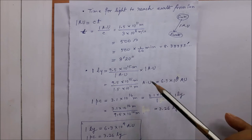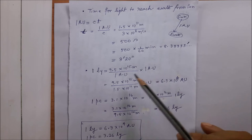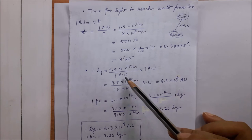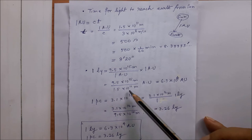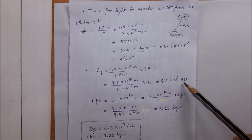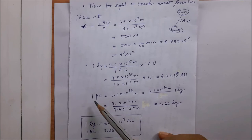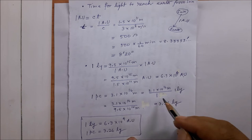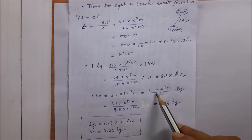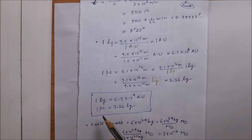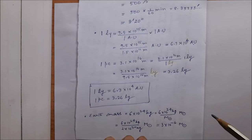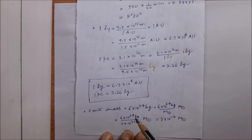Let us find the conversion factors between light year and astronomical unit. One light year is 9.5 times 10 to the power 15 meters. Dividing by one astronomical unit and putting its value explicitly, simplification gives 6.3 times 10 to the power 4 astronomical units equals one light year. Similarly, one parsec: taking the value of one pc and multiplying by one light year divided by one light year and substituting the value of one light year, we get 3.26 light years — so one parsec is 3.26 light years.